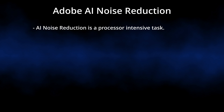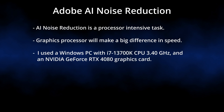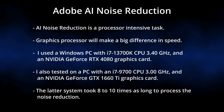AI noise reduction is a processor-intensive task. In particular, your graphics processor will make a big difference in speed. I used a Windows PC with an NVIDIA 4080 graphics card for this video, and also tested it on a PC with an NVIDIA GTX 1660 Ti. The latter system took eight to ten times as long to process the noise reduction, so be aware that processing times will vary significantly depending on your system configuration.